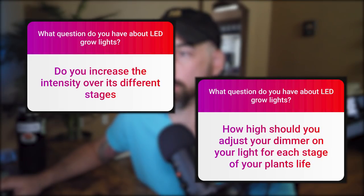Do you increase intensity over different stages, and how high should you adjust the dimmer for each stage? Looking at PAR measured in PPFD: 200–400 PPFD is what I aim for with seedlings, clones, and mother plants; 400–600 PPFD for the vegetation stage; and 600–900 PPFD for the flowering stage. If you're supplementing CO2, you can go higher. Without a PAR meter, use the PAR chart released by the grow light company — it's usually on their listing or available from the manufacturer.